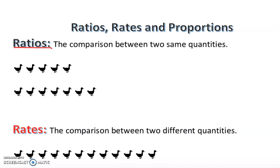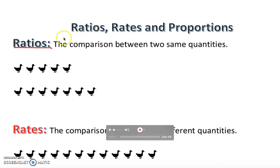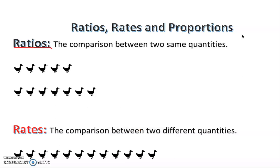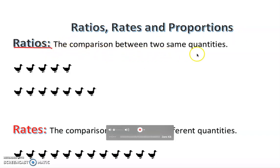Welcome back guys. In this video I'm going to show you what is the meaning of ratio, rates, and proportion, and how can you recognize them. The ratio is basically a comparison between two same quantities, or you can simply say ratio is a quotient of two same numbers, because we're going to have some fraction.